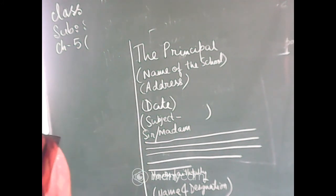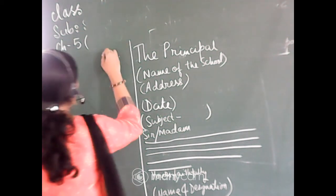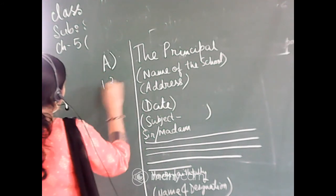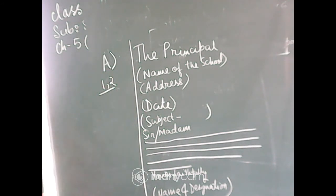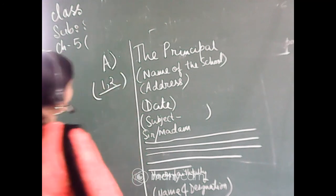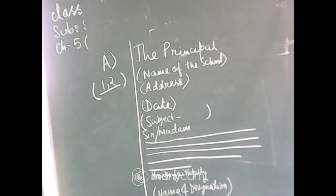Homework is there from this chapter also. From formal letters you will write question number A1 and A2. It's very easy. Both of them are letters to the principal. So question number A1 and A2 are your homework. And this is for all the students of class 7. The same homework is there.